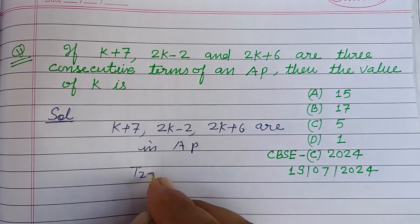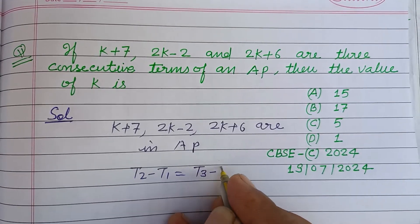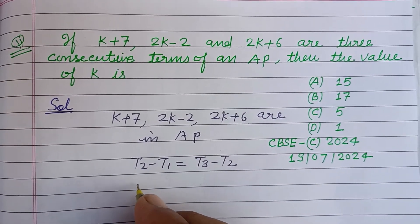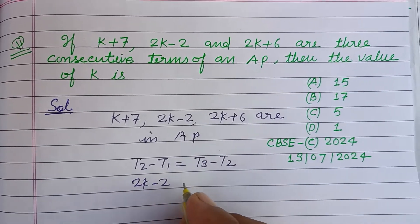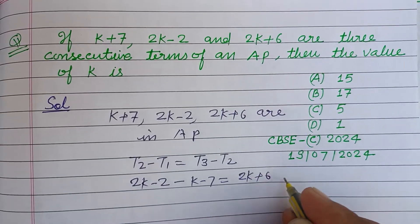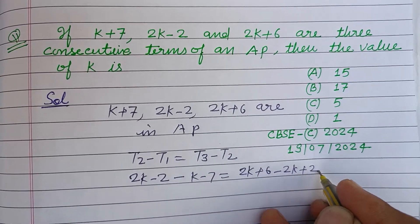Then t₂ - t₁ equals t₃ - t₂. You know this. So 2k - 2 - (k + 7) equals 2k + 6 - (2k - 2).